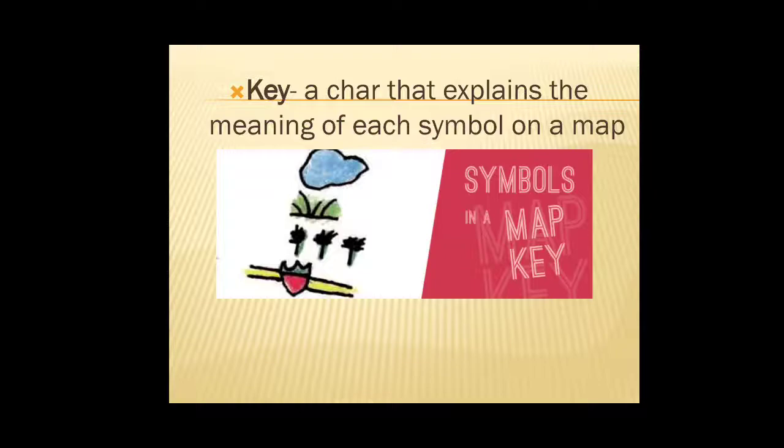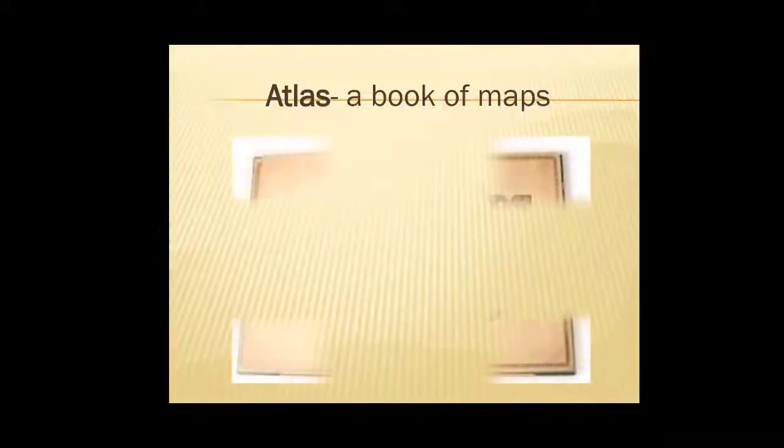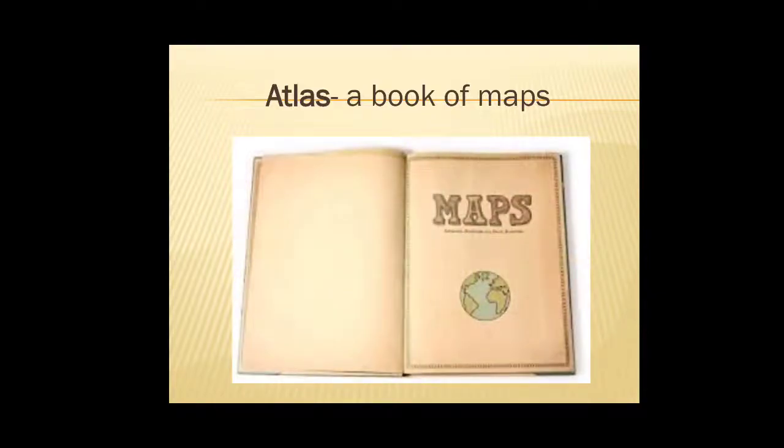The next one is atlas. Atlas is a book of maps. This is what atlas is. It is a book of maps. You have all the maps here. A political map, physical map, river map, road map, everything.